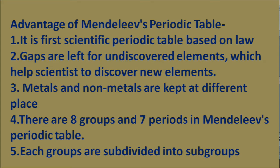Advantages of Mendeleev's periodic table: It is the first scientific periodic table based on a law. Gaps were left for undiscovered elements, which helped scientists to discover new elements. Metals and non-metals are kept at different places. There are eight groups and seven periods in Mendeleev's periodic table, and each group is subdivided into subgroups.